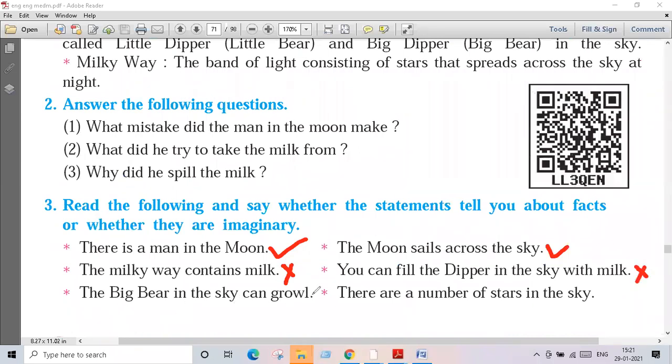Big bear in the sky can growl? No, this is also imaginary. There are a number of stars in the sky? Yes, this is the fact. So what is the tick? That is your fact. And then you cross it. That is the imaginary.